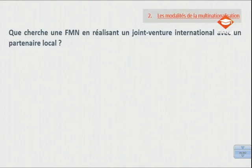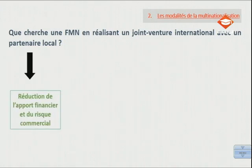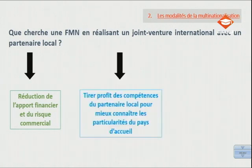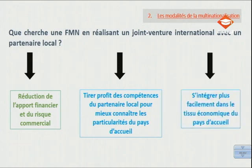Donc, d'après ce texte, une firme multinationale cherche à travers un joint-venture international avec un partenaire local : d'abord la réduction de l'apport financier et du risque commercial — ce qui vaut aussi pour un joint-venture domestique. Ce qui est plus spécifique au joint-venture international, c'est que la firme multinationale veut tirer profit des compétences du partenaire local pour mieux connaître les particularités du pays d'accueil, et s'intégrer plus facilement dans le tissu économique de ce pays.